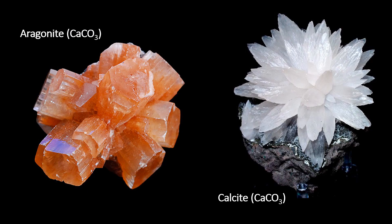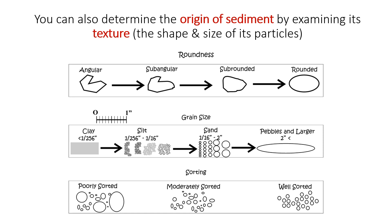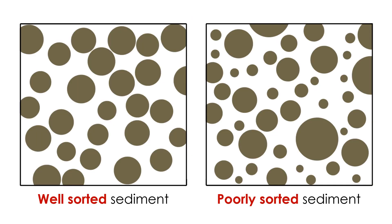Most shells consist of either calcite or aragonite, meaning if your sediment primarily consists of calcium carbonate, it is most likely biogenous sediment. You can also determine the origin of sediment by examining its texture. When geologists say texture, they are referring to the shapes and sizes of grains in a sediment or rock sample. Some sediment consists of large grains, others of small grains. Some sediment is well-sorted — all grains the same size — while other samples are poorly sorted, with grains of many different sizes.